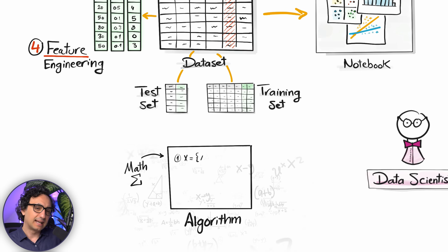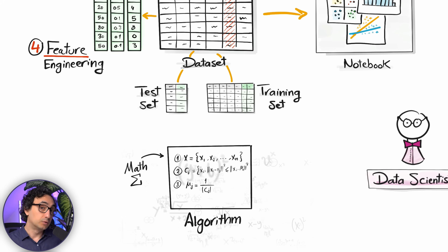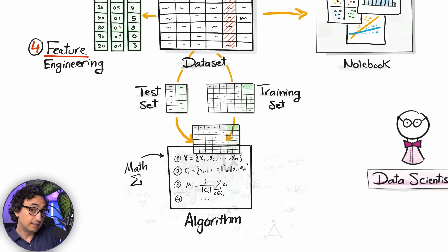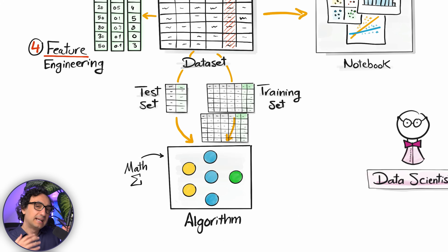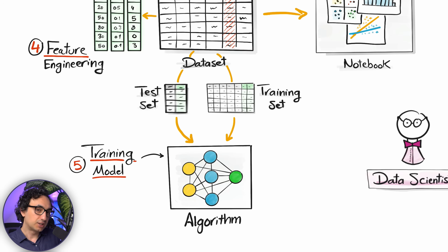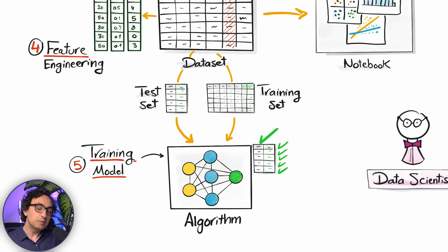The most important step is choosing an algorithm — a set of mathematical steps describing how to learn from data. We have many algorithms and must pick the right one for the problem. We then apply the training dataset to the algorithm, combining mathematics with data. The algorithm goes through all your data, learns patterns, finds connections and relationships, and adjusts itself to minimize errors. The result is a trained model.